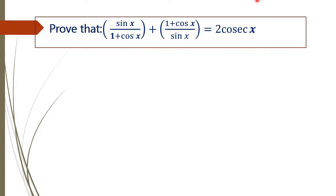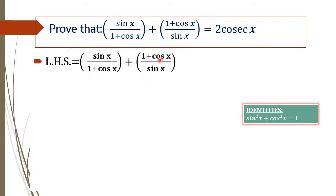Okay, we are going to start from the left hand side and we have to reach the right hand side, that is 2 by cos x. We take the LHS of this equation, that is sin x by 1 plus cos x plus 1 plus cos x by sin x. Now, in order to reach the right hand side, we are going to simplify this equation first.